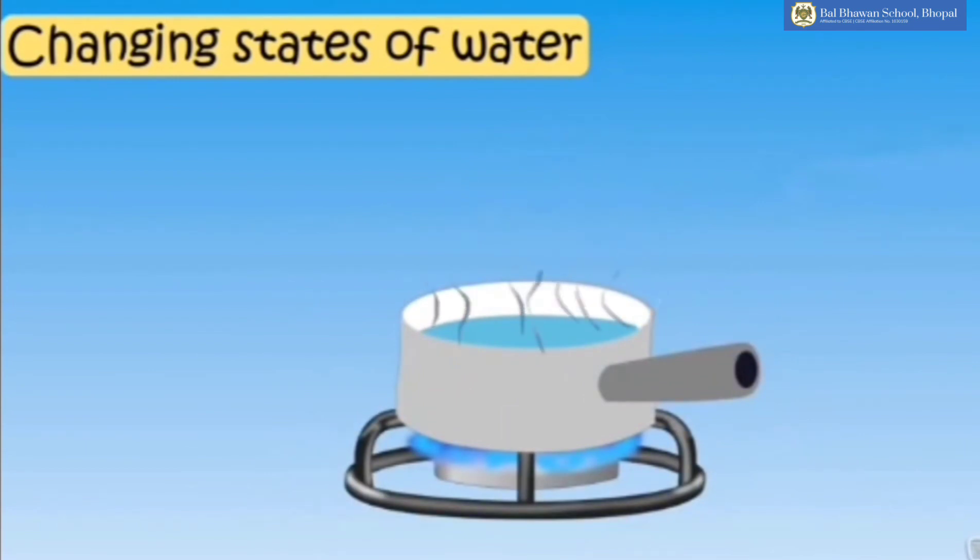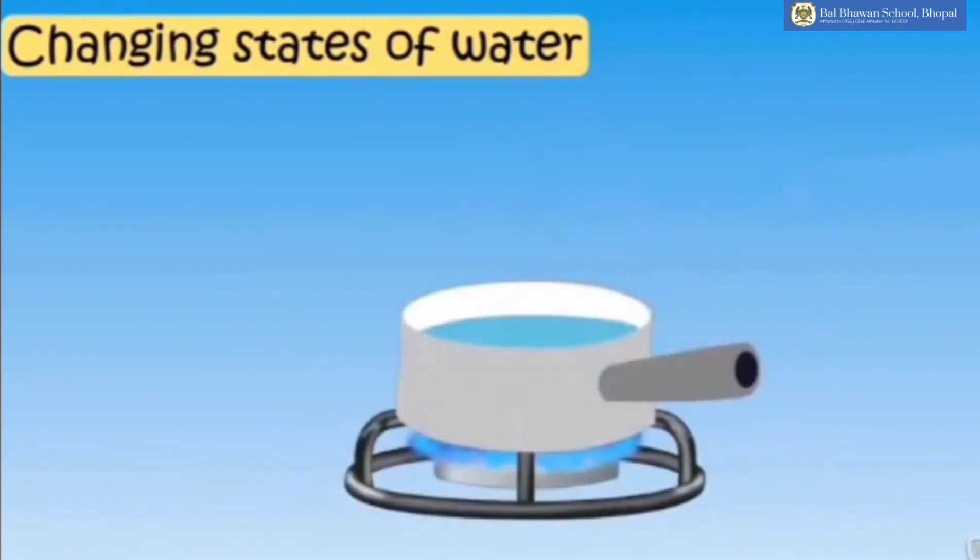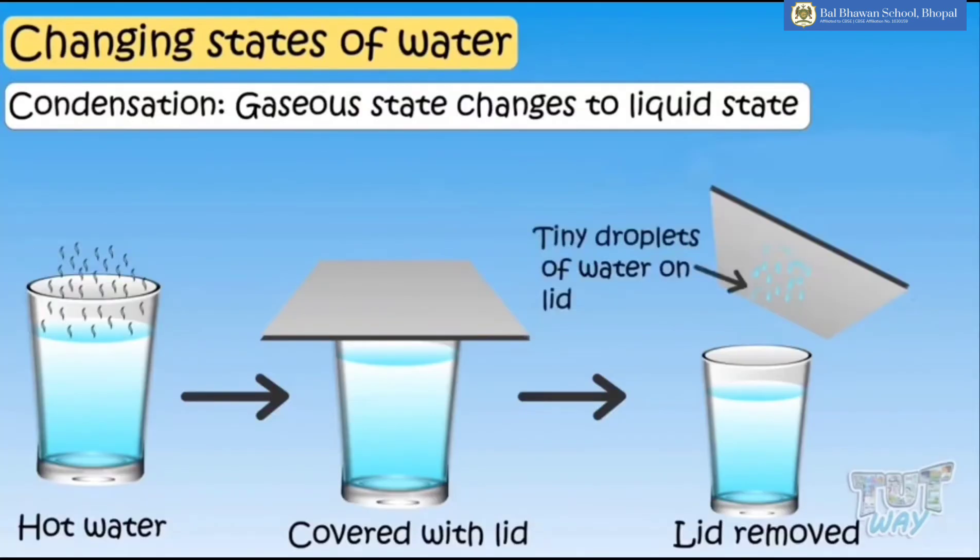When we boil water over a flame, steam starts coming out of boiling water. This steam is water vapour. Water also changes from its gaseous state to its liquid state. If we take a glass of hot water and cover it with a lid, after a while, we will see on the lids, tiny droplets of water. These tiny droplets of water are the water vapors which were coming out of the hot water.